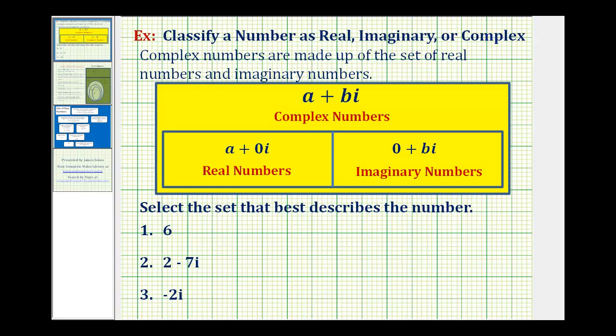Let's start with a quick review. Complex numbers, or numbers in the form of a plus bi, are made up of the set of real numbers and imaginary numbers. When we think of a complex number, we can think of it having two parts: a represents the real part of the complex number, and bi represents the imaginary part of the complex number. Remember, i is equal to the square root of negative one.